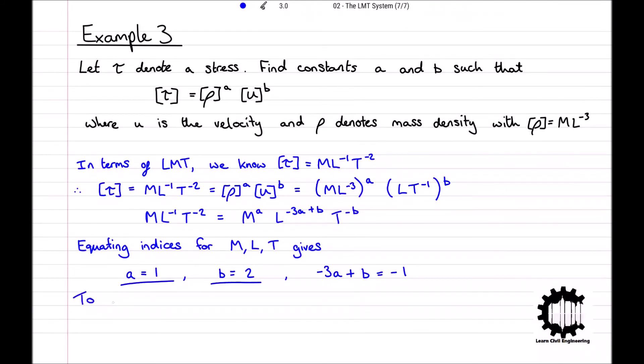So although we already have our answers to the question, we can check them by substituting our values for A and B into the equation. Minus 3 times by 1 plus 2 equals minus 3 plus 2, which equals minus 1.